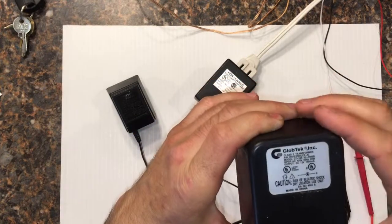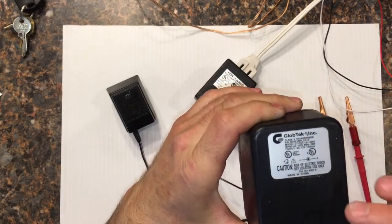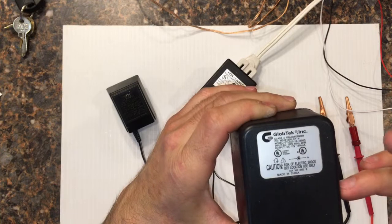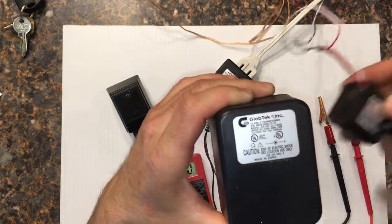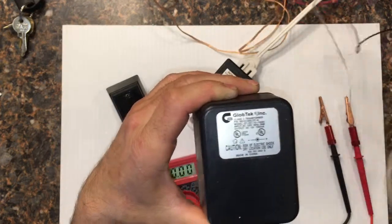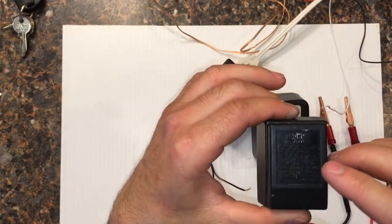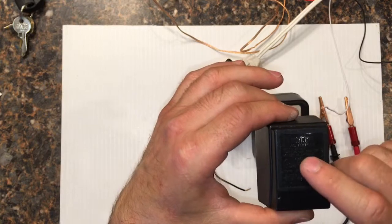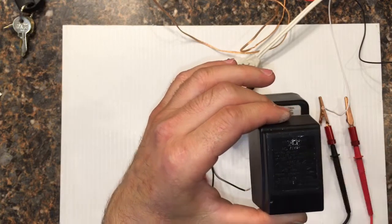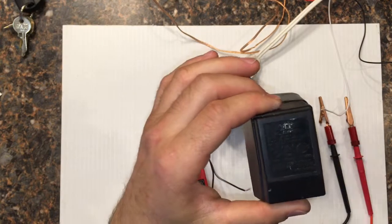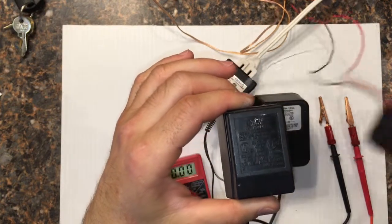This one right here, I would feel comfortable running a 12 volt relay and a 12 volt little DC water pump like this for an auto top off without a problem. I actually had this one, this one's 9 volt 350 milliamp. I did have this one running a little DC water pump and a relay.